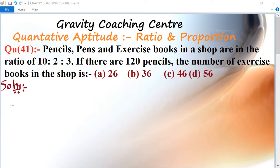The pencil, pen and exercise book ratio is given as 10:2:3 and the total number of pencils is 120. We need to find the number of exercise books. So, let the number of pencils be...